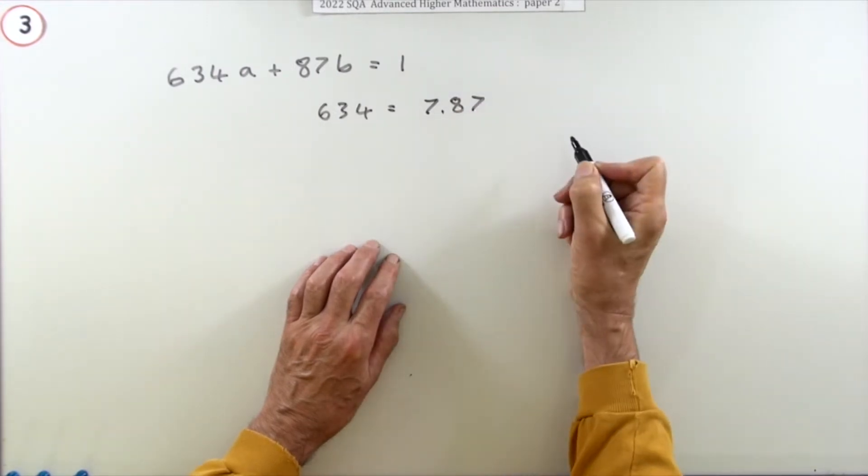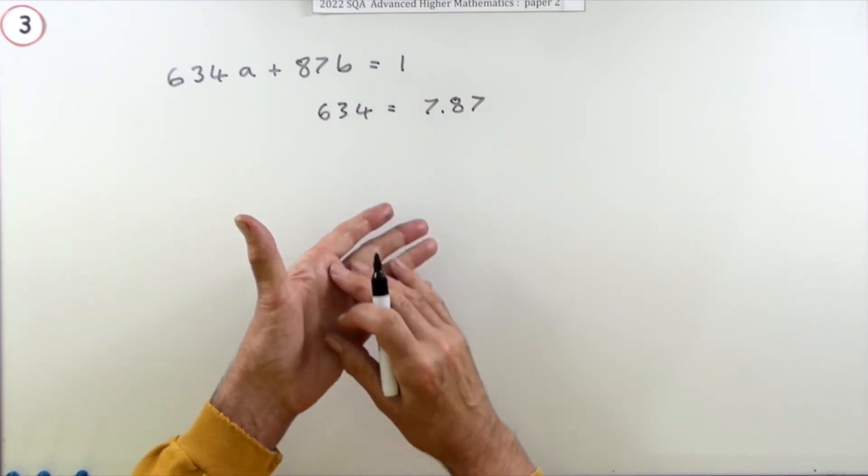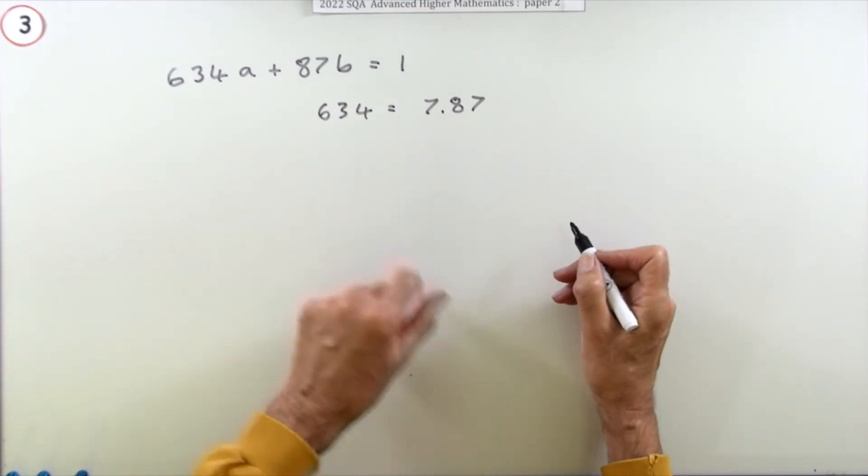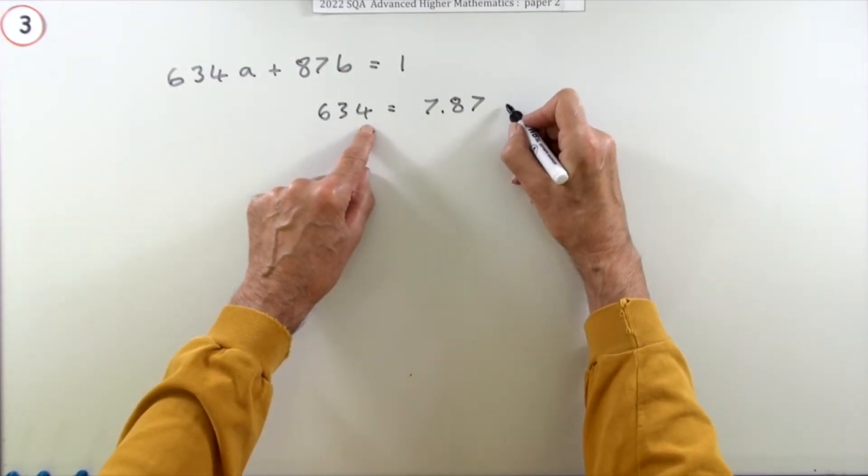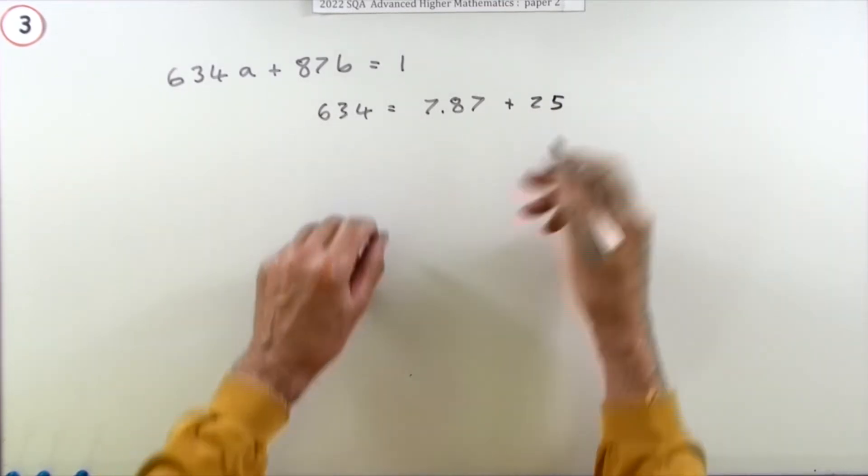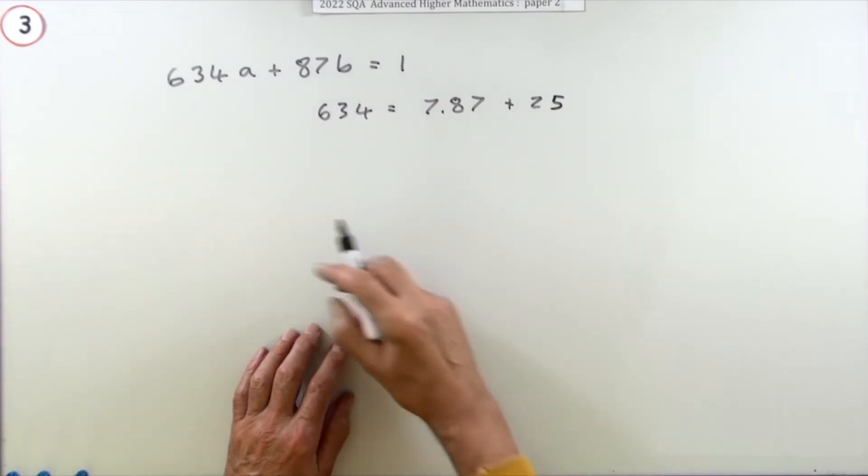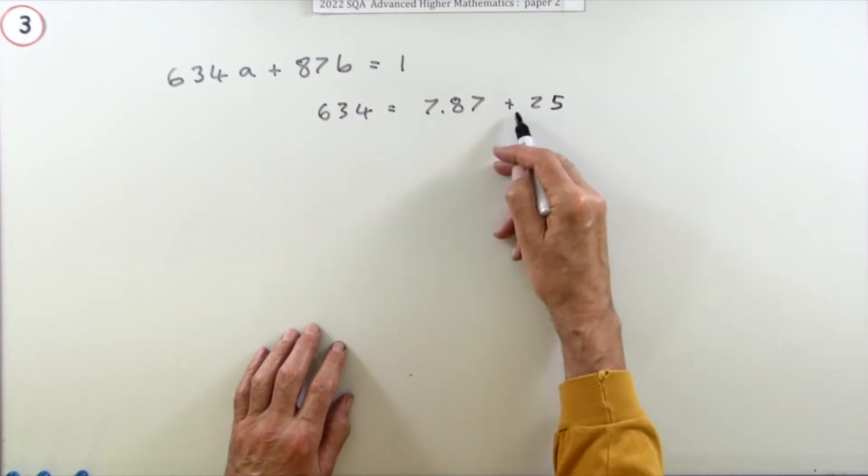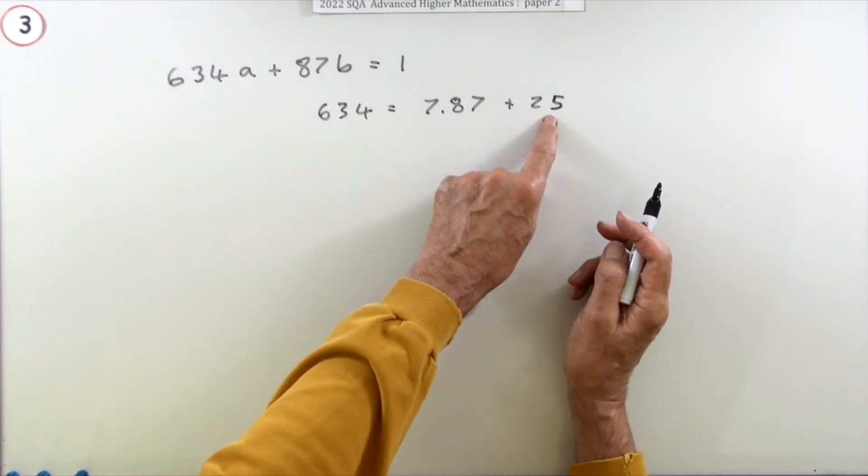7 times 87 is 609, which is going to leave you with 25. Well, that's kind of spoiled it because that means 87 doesn't divide in - it's not a multiple of 87, it's a multiple of 87 plus a bit. The next best choice would be, what about 25? Could that be my candidate?